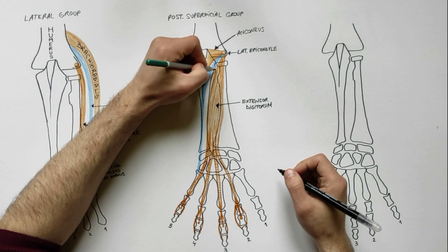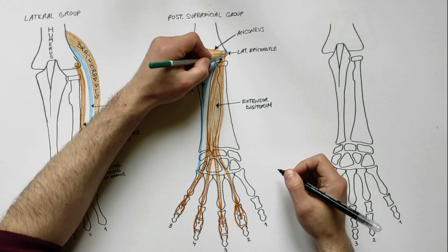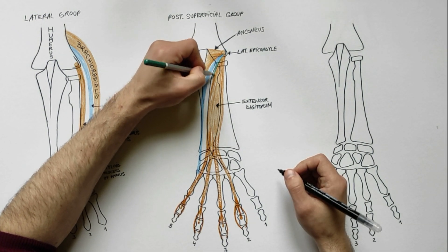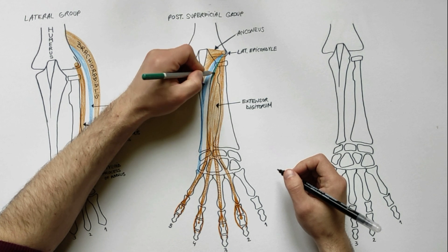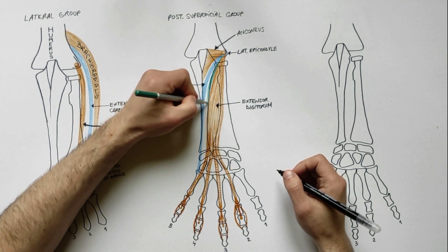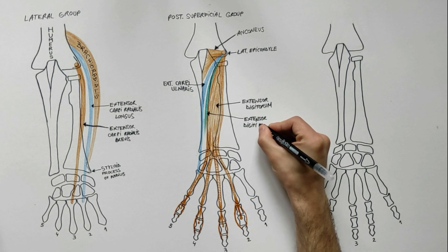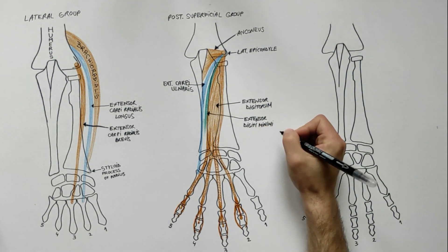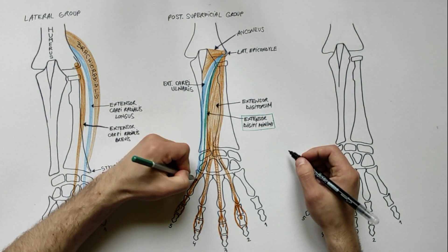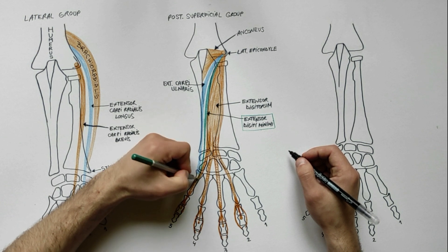Lying medially to the extensor digitorum is a small muscle called the extensor digiti minimi. This muscle also originates from the lateral epicondyle of the humerus. Distally, its tendon fuses with the extensor digitorum tendon for the little finger.